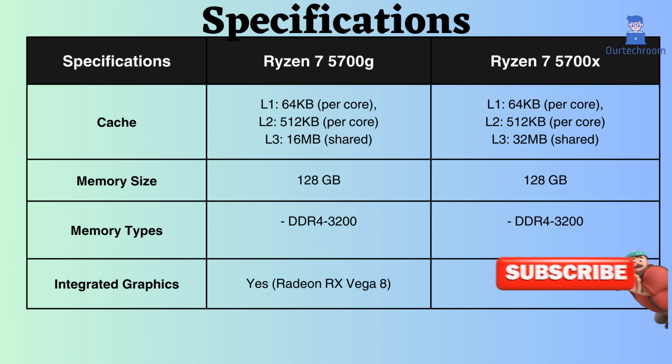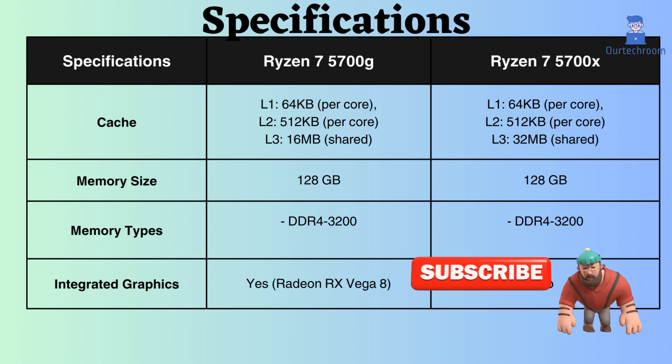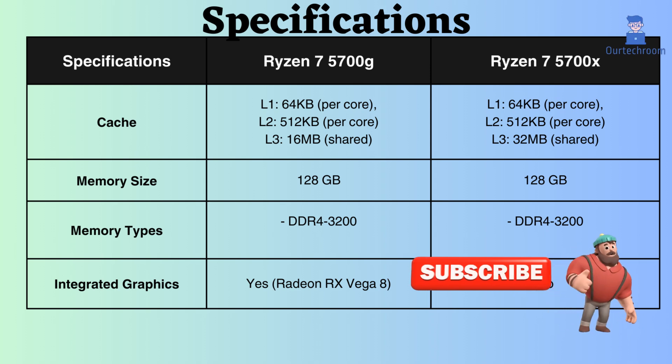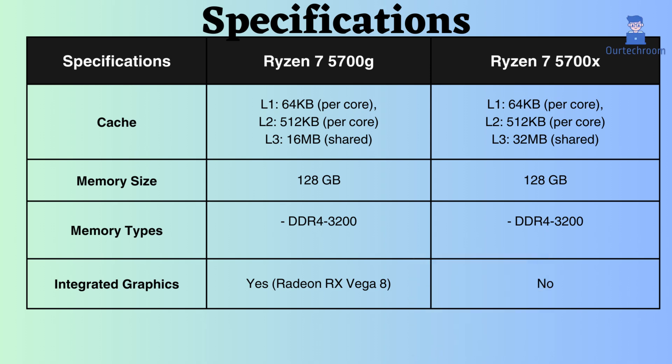However, the L3 cache of the Ryzen 7 5700X is 32 MB shared, whereas that of the Ryzen 7 5700G is 16 MB. With the larger cache size of the Ryzen 7 5700X, it gains an advantage in scenarios where data access patterns favor smaller, faster caches, such as in some single-threaded games.